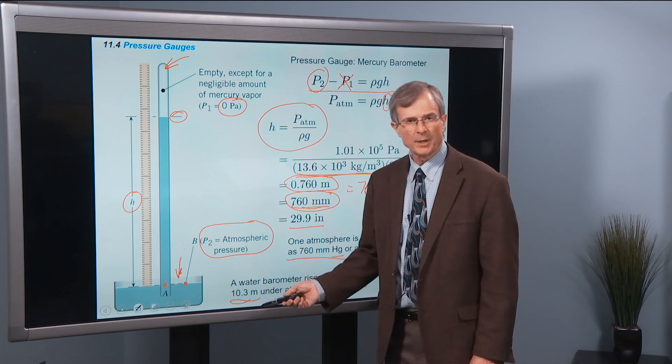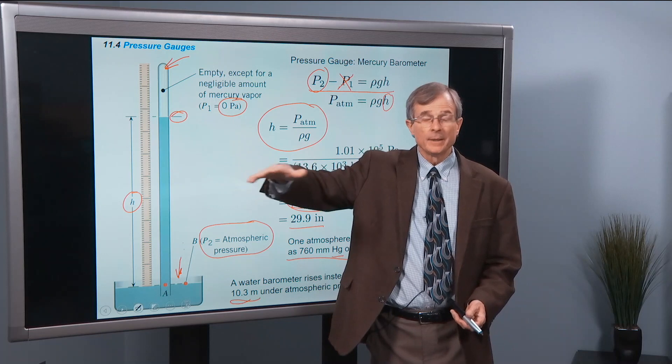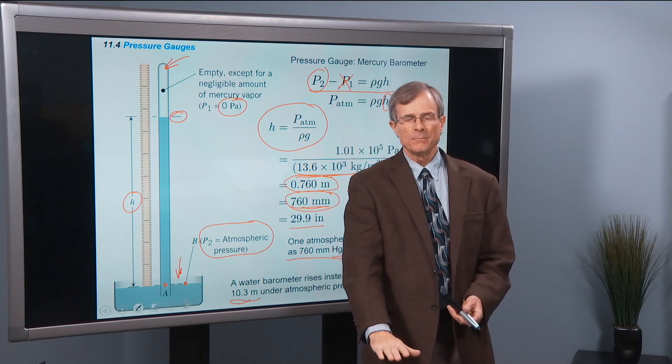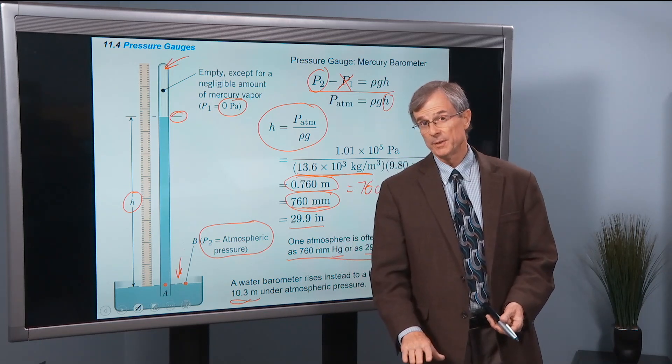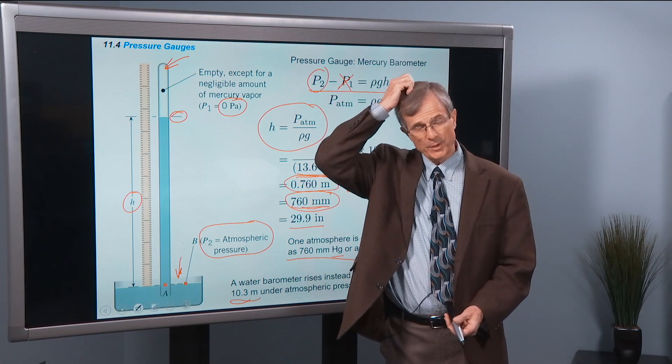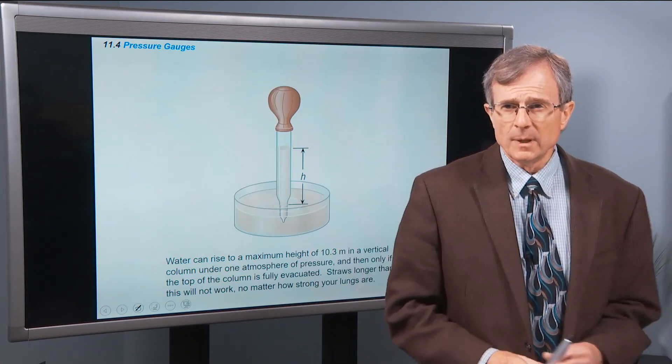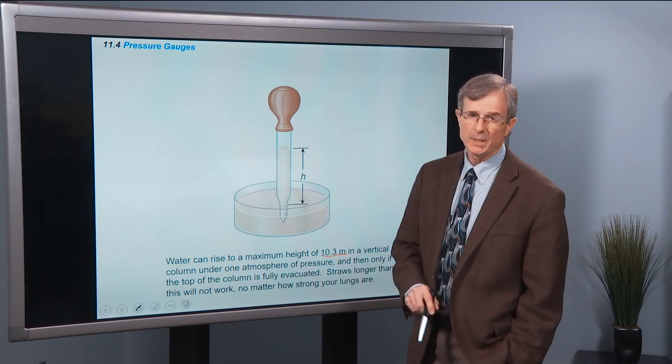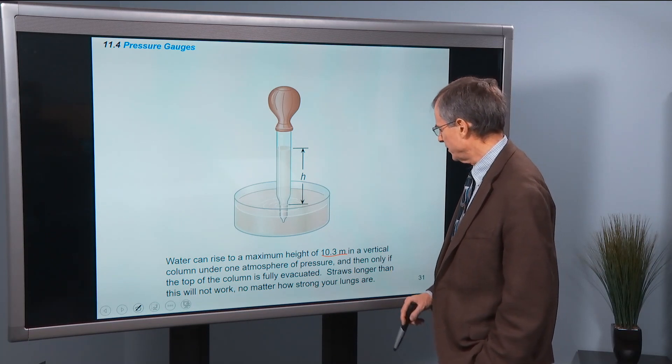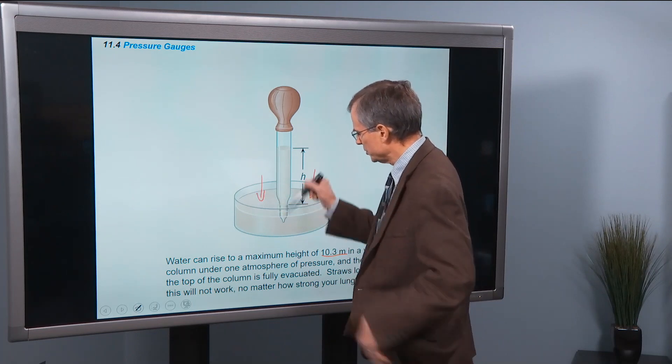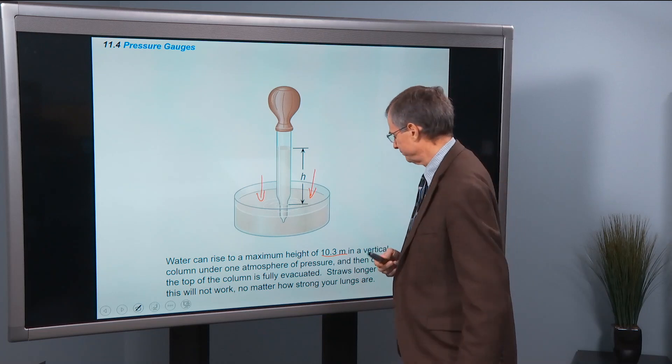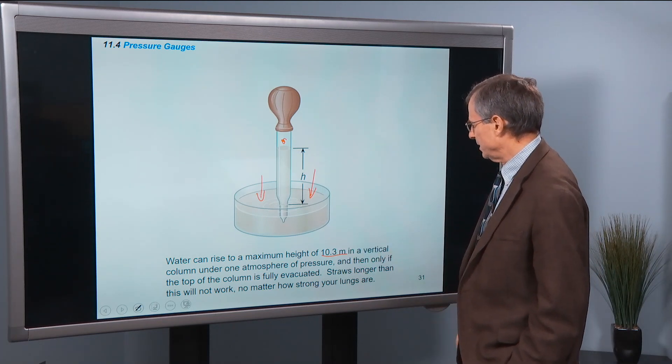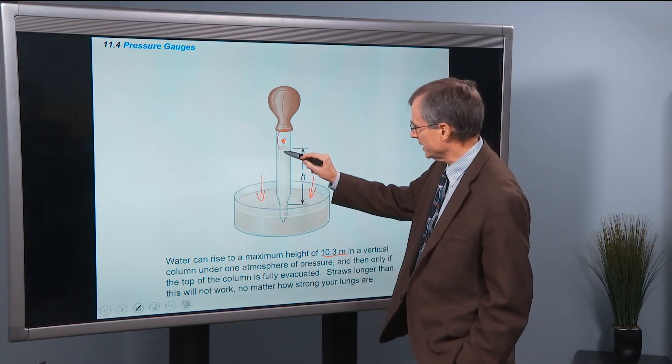And as we talk, this is the number that we talked about before. That as you, at the surface of a lake, the pressure of the atmosphere pushing down on it is 1 atmosphere. But as you go down 10 meters into the lake, each time you increase your depth by 10 meters, you up the pressure by 1 atmosphere. That's where this comes from. So in a column of water, water can rise to a maximum height of 10.3 meters in a vertical column, under 1 atmosphere of pressure. So that's the pressure pushing down here that's driving this water up the column that's been evacuated, because there's no atmospheric pressure inside here. And you only get 10.3 meters if the top of the column, this right here, is fully evacuated.